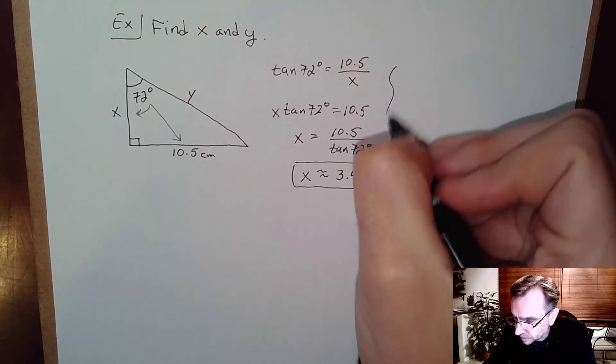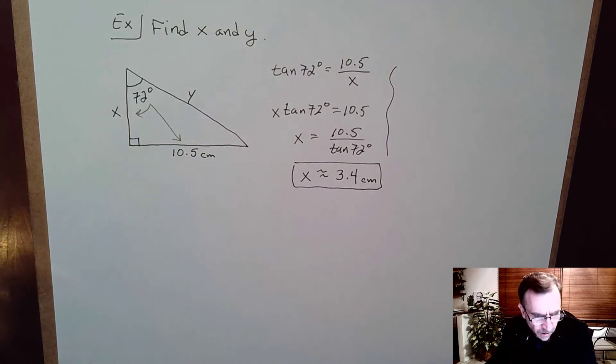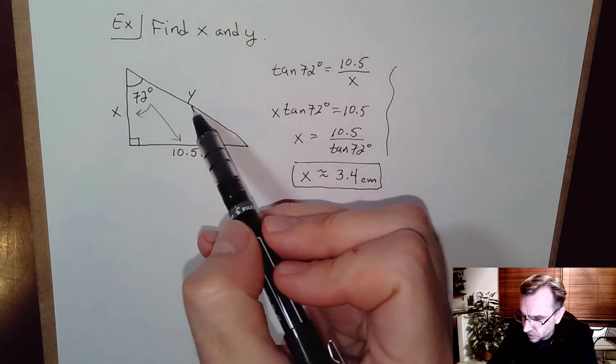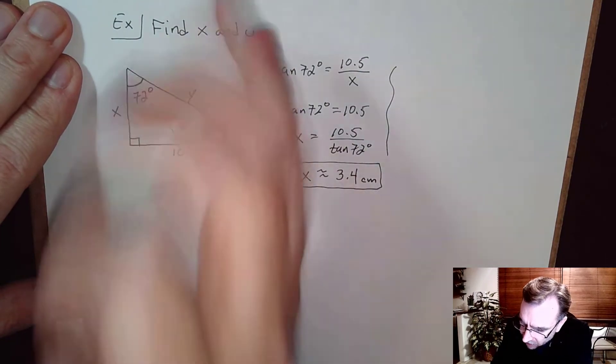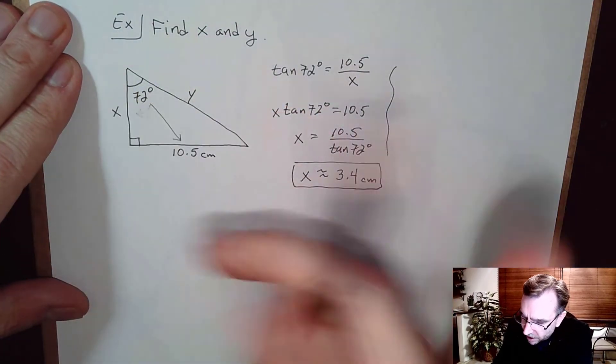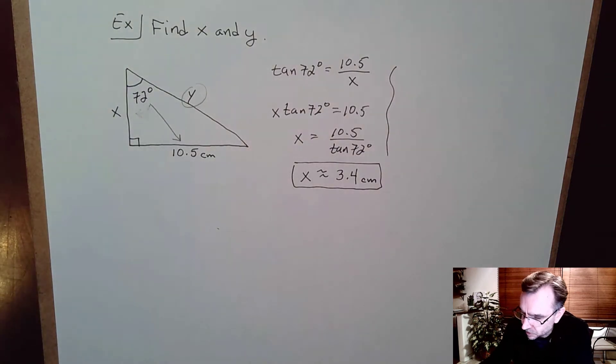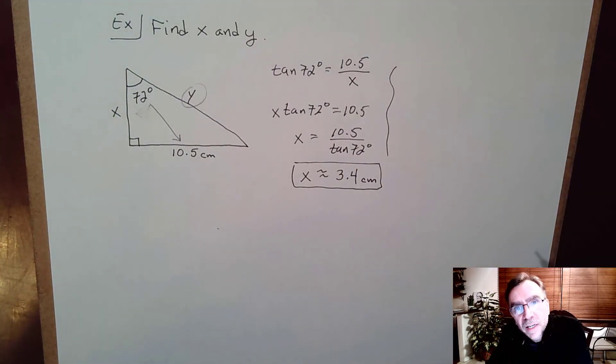So we found x. Now the goal is to find y. The side opposite is 10.5 but now the unknown is the hypotenuse. So opposite and hypotenuse, what comes to mind? Well sine, right. Sine is defined to be opposite over hypotenuse.